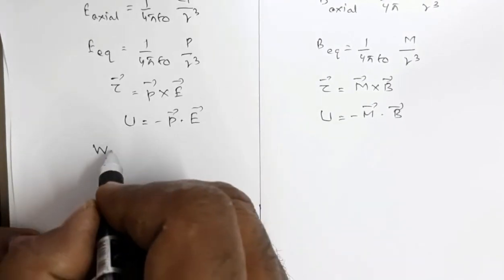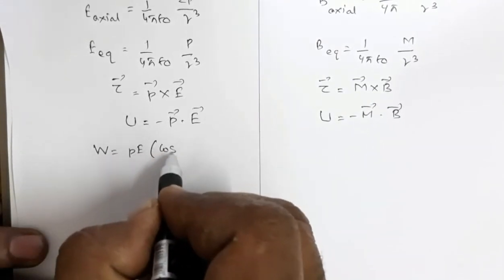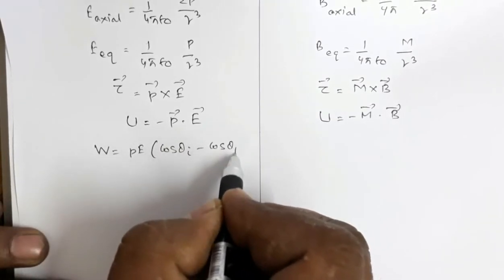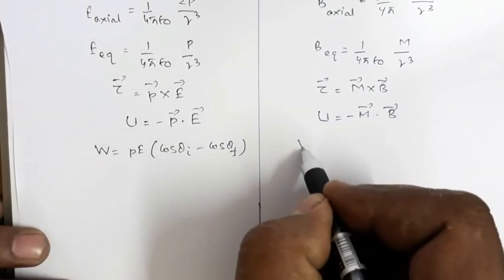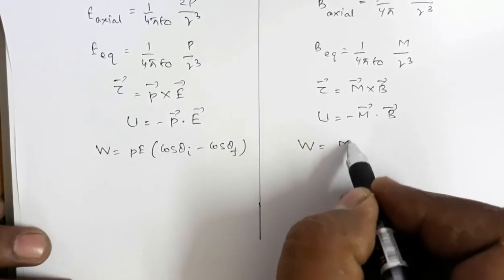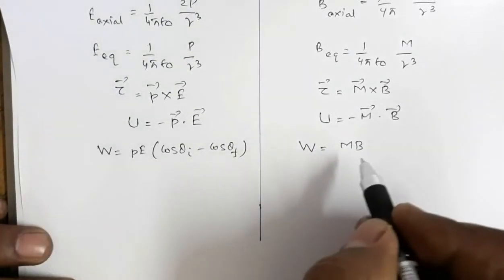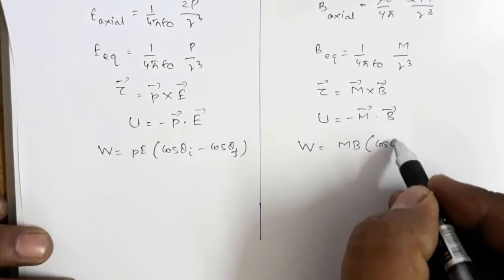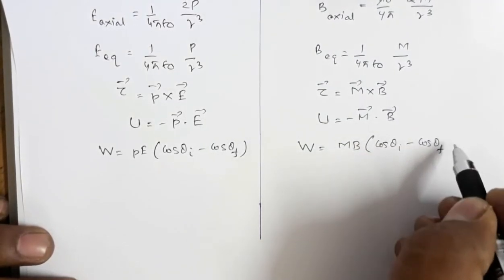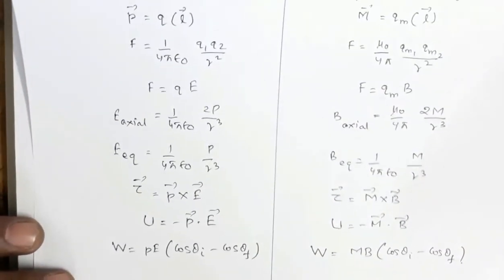The work done in rotating an electric dipole in an electric field is W = PE(cosθ_initial − cosθ_final). The analogous magnetic expression is W = MB(cosθ_initial − cosθ_final), where P is replaced by M and E is replaced by B.